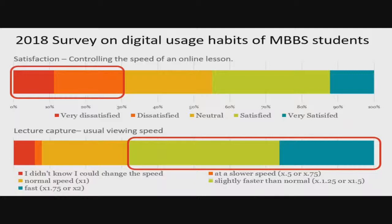In the same survey I asked what their usual viewing speed was for lecture capture, and almost two-thirds of them watch it fast or really fast. I don't know if anyone's watched lecture capture at double speed, but it's doable. So you can understand why students would prefer to control the speed, particularly when they've been given an hour to do something that takes them 45 minutes.